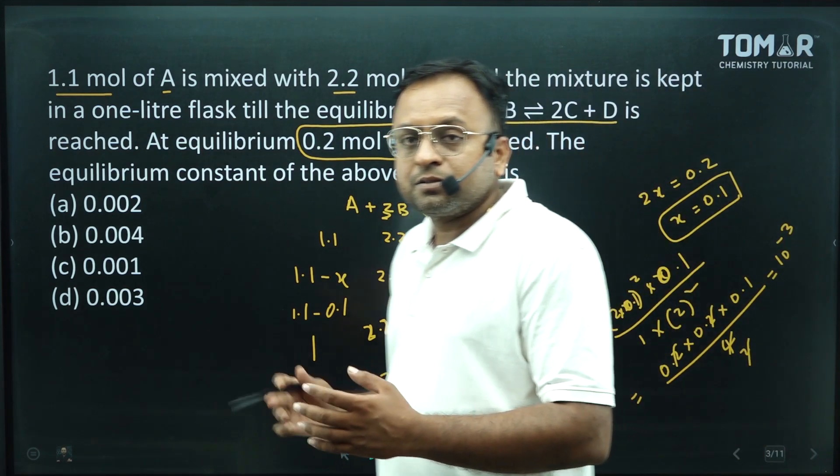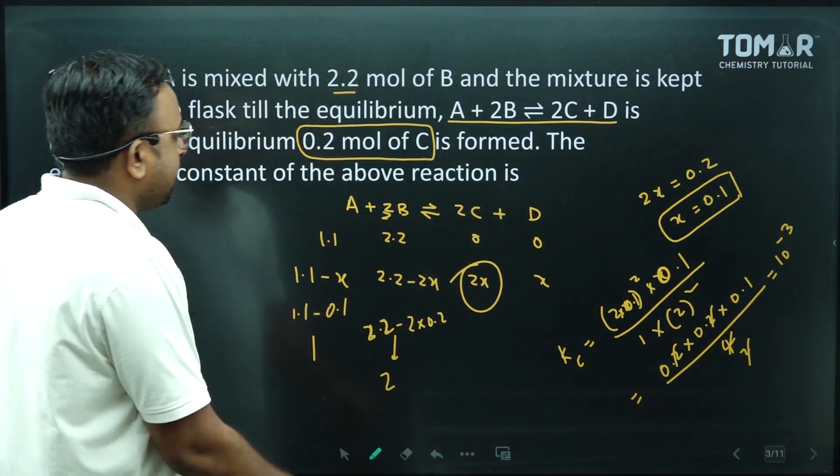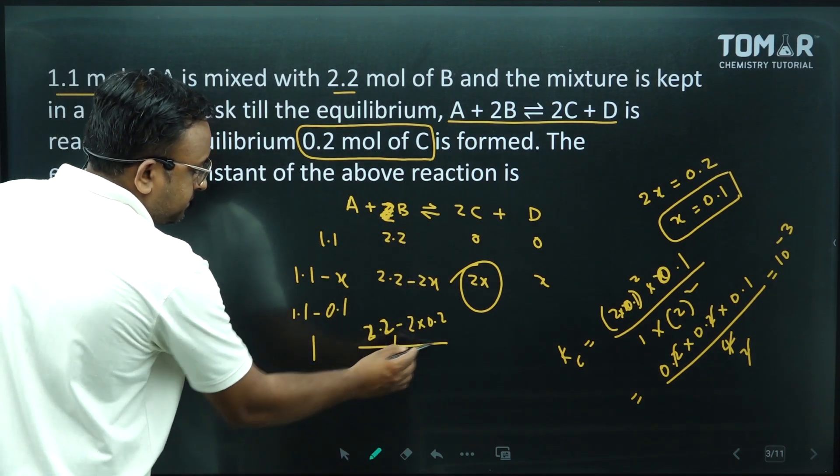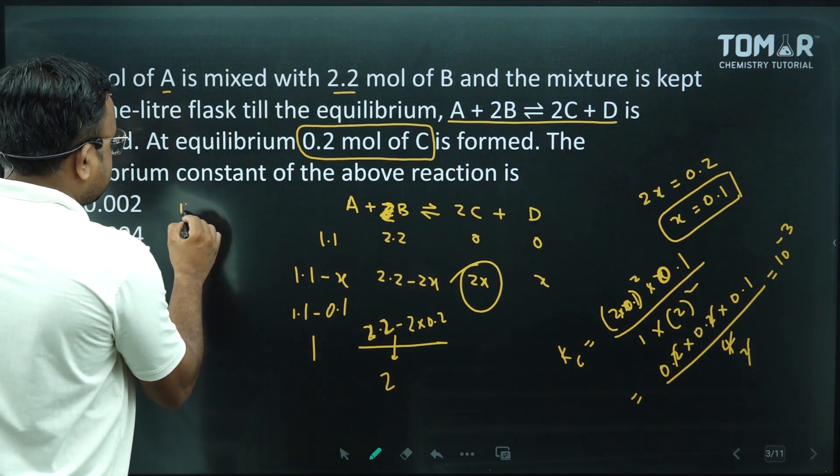So Kc will become 10 to the power minus 3. This one will become 10 to the power minus 2. It will become 10 to the power minus 2 plus 4. This will become 10 to the power minus 3.